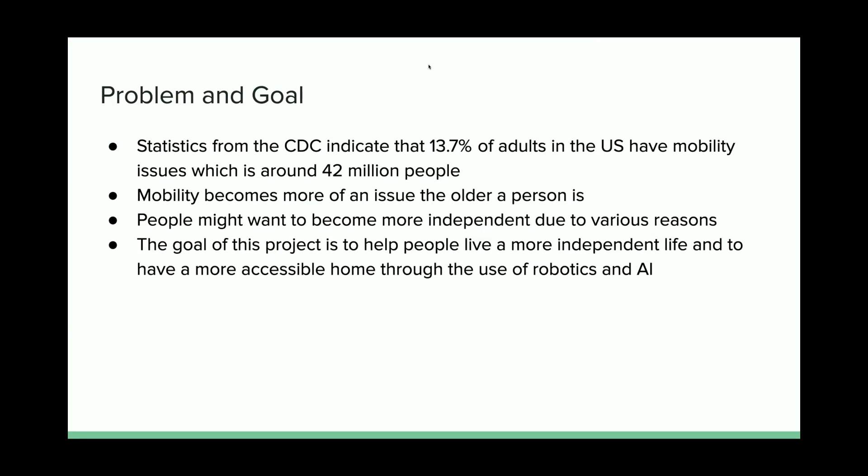Mobility becomes more of an issue the older a person is. People might want to become more independent due to various reasons, like not wanting to be a burden on other family members. The goal of this project is to help people live a more independent life and to have a more accessible home through the use of robotics and AI.